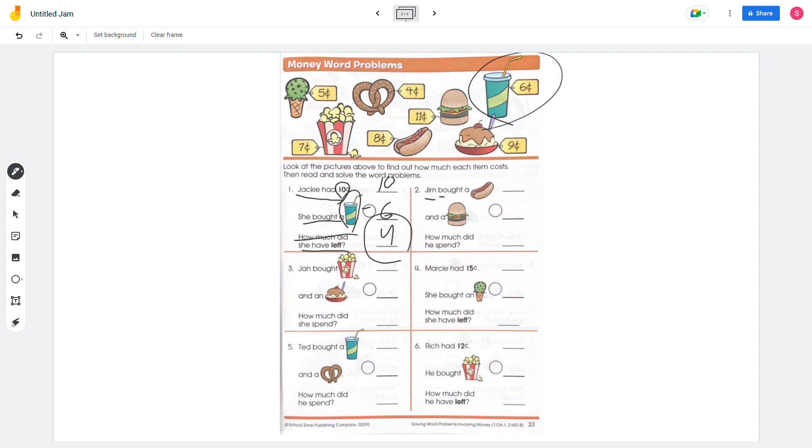Number 2, Jane bought a hotdog and a hamburger. Hotdog costs 8 and hamburger costs 11, so how much did she spend? That means plus, which equals 19. On number 3, Jane bought popcorn and ice cream. Popcorn costs 7 and ice cream costs 9, and 7 plus 9 equals 16.